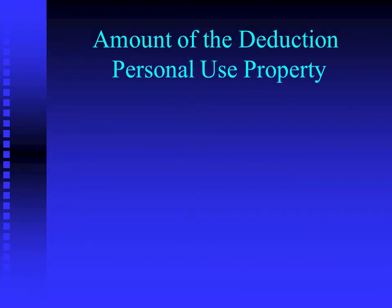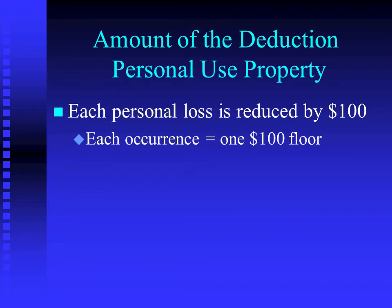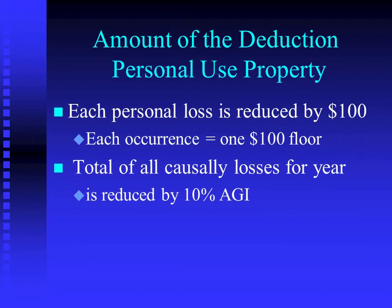Once you've determined the starting point for the casualty loss, we have a series of reductions. Note that we're still talking about personal use property — we have a different set of rules for business use property. First, you reduce each occurrence by one hundred dollars. This is the one-hundred-dollar floor per casualty. It seems like a very small amount of money, but this provision has been in the tax code a long time — you don't have to look back past the 1950s for a hundred dollars to be a lot of money.